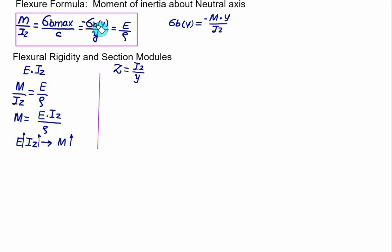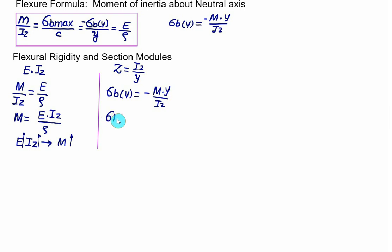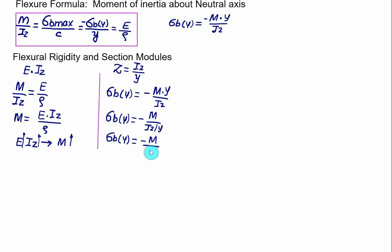If you select the bending stress term and the first term, the bending stress sigma, which is a function of Y, is given as minus M multiplied by Y divided by IZ. We can write Y in the denominator and quickly calculate the bending stress as minus M divided by IZ divided by Y — that is, minus M divided by the section modulus Z.